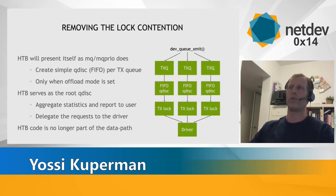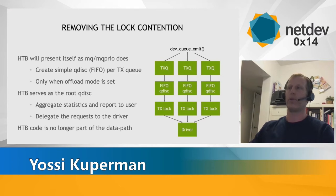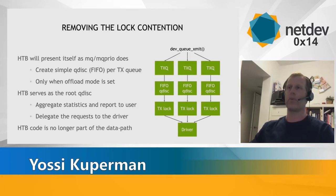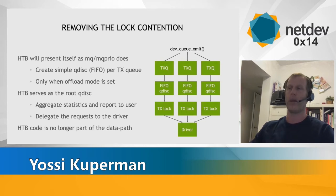Even though the classification is out of the way, we still have the HTB QDisc lock along the data path. In order to remove it, we suggest modifying HTB to present itself as a MultiQ QDisc, in a similar way that MQ and MQ prior does. So we will have HTB as a root QDisc, which will serve as an interface for the user to configure classes and query statistics. In addition, we allocate a simple FIFO QDisc per TXQ as depicted in the following diagram. This way, we remove HTB code entirely from the data path, essentially pushing down all the heavy lifting of traffic shaping and token handling to the hardware. Going forward with this approach allows us to provide the user with HTB semantics while maintaining wire speed performance for nowadays high-speed NICs.